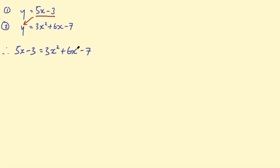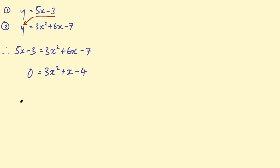So subtract 5x from this side and add 3 to that side, so I'll be left with 0 on the left hand side. On the right: 3x squared, then 6x minus 5x equals plus x, and then minus 7 plus 3 equals minus 4. Switching it around so I have the quadratic on the left: 3x squared plus x minus 4 equals 0. We need factors of 4 and 3 that make plus 1.